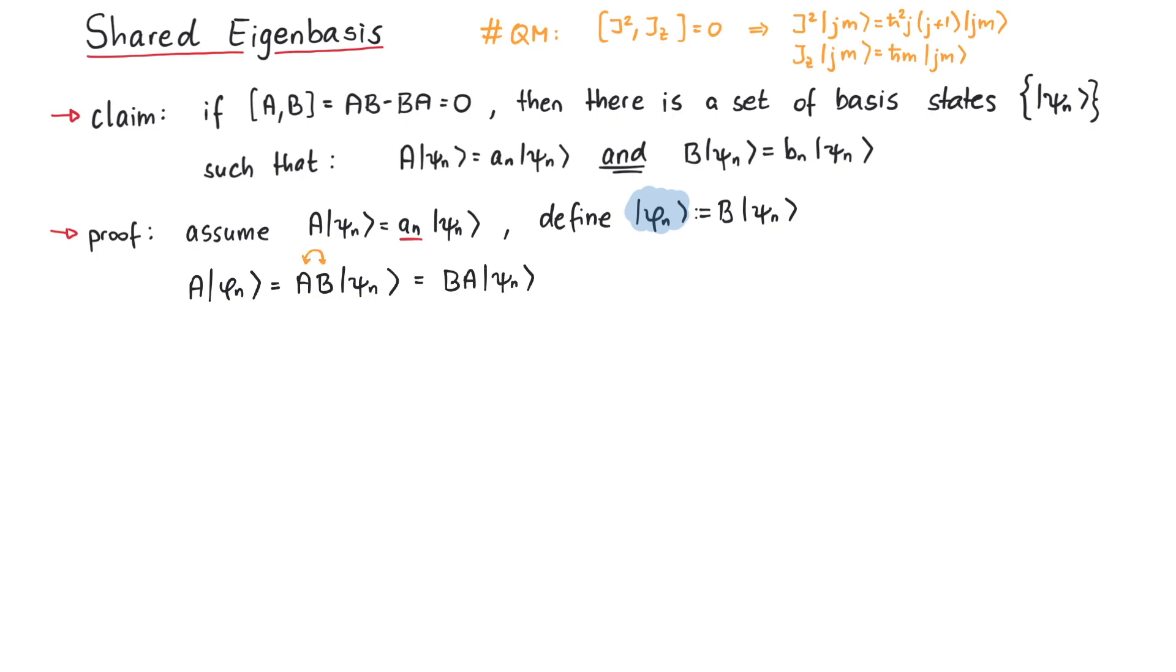Since A and B commute, this is the same as B, A acting on psi_n. Recall that psi_n are the eigenfunctions of A, so this yields the eigenvalue a_n. What remains can be written as a_n phi_n. So yes, phi_n really are eigenfunctions of A.